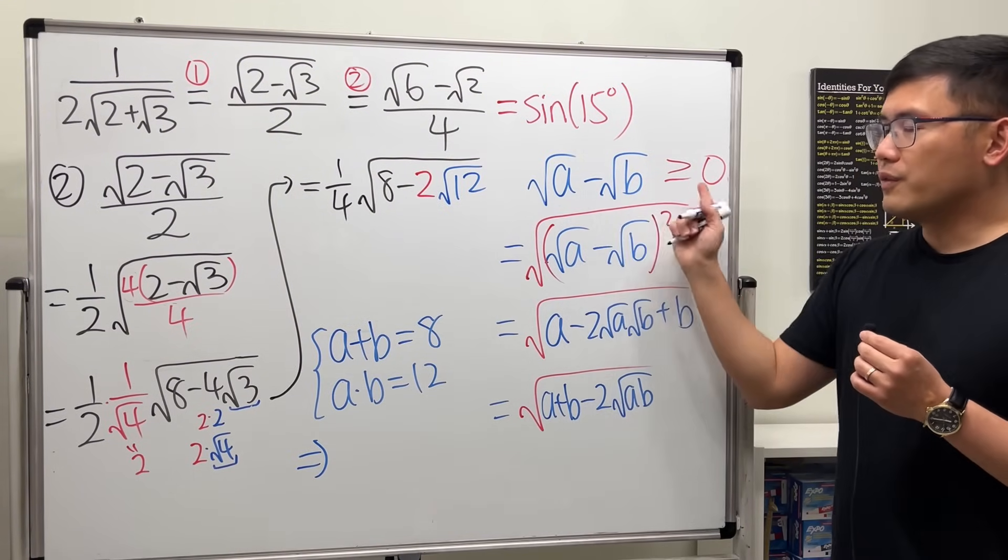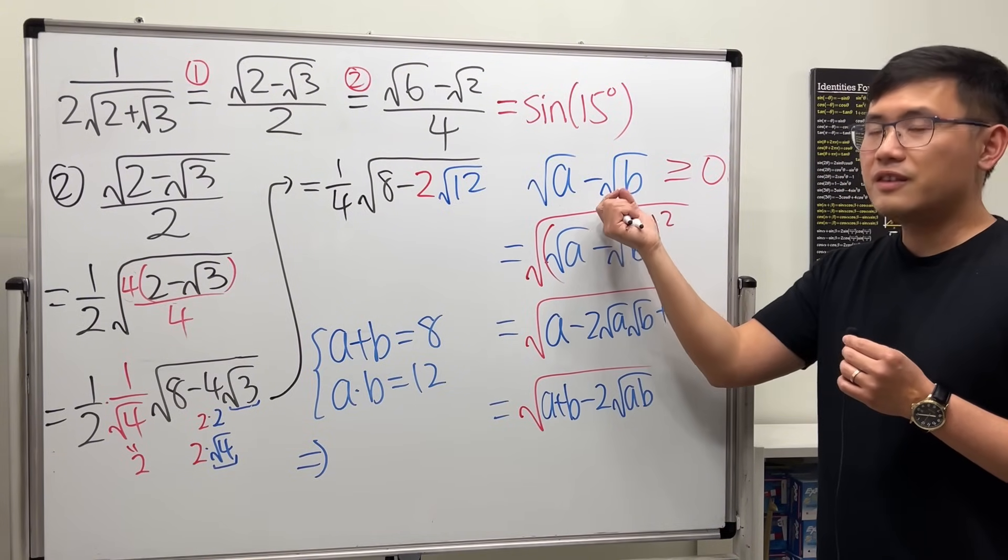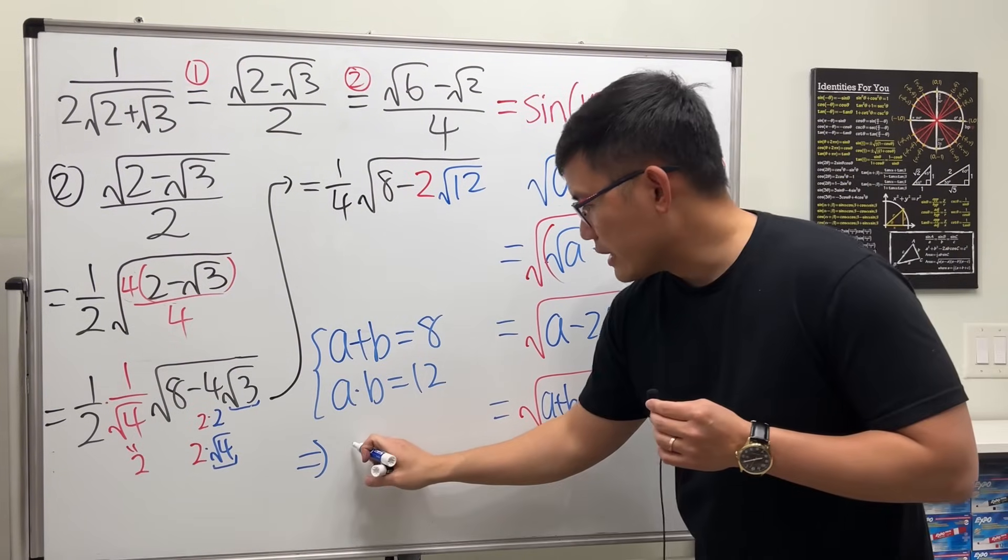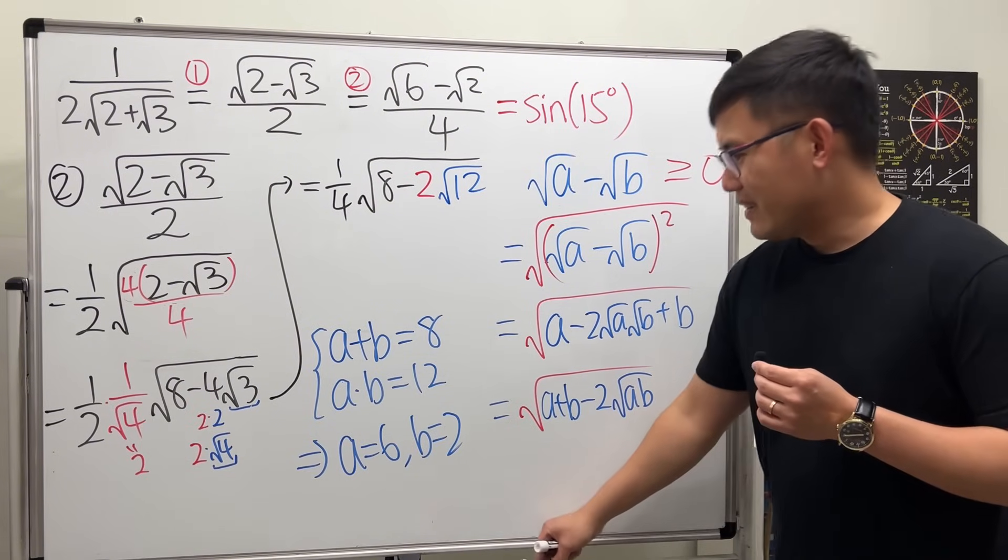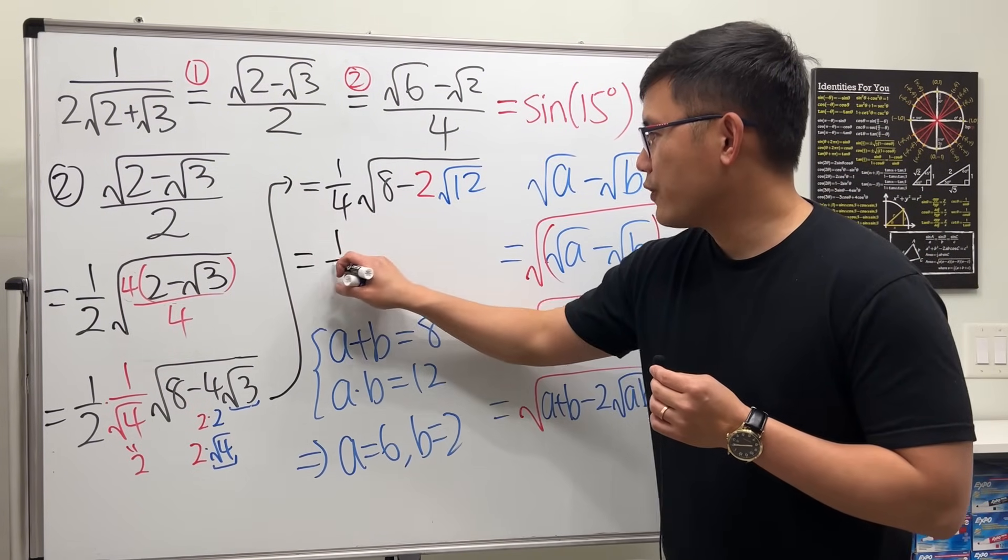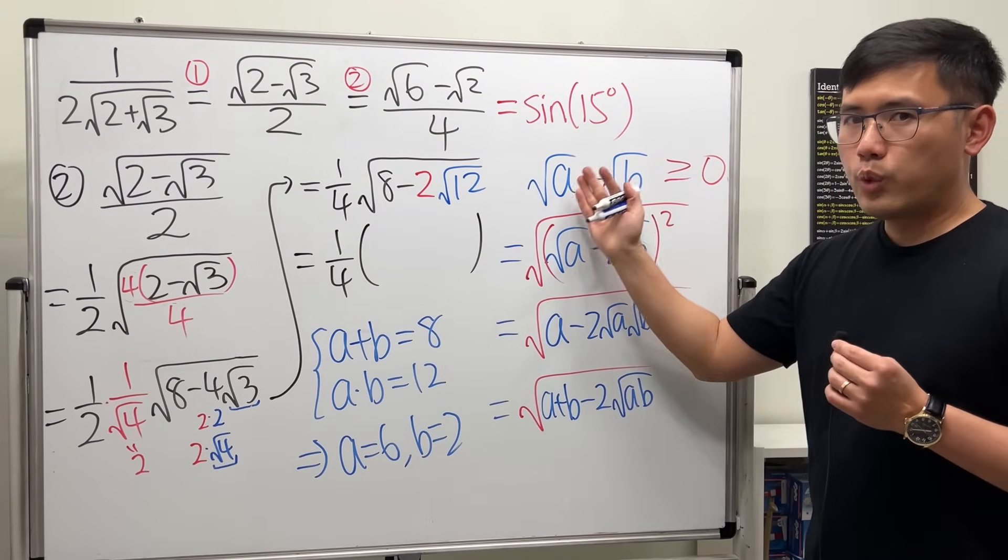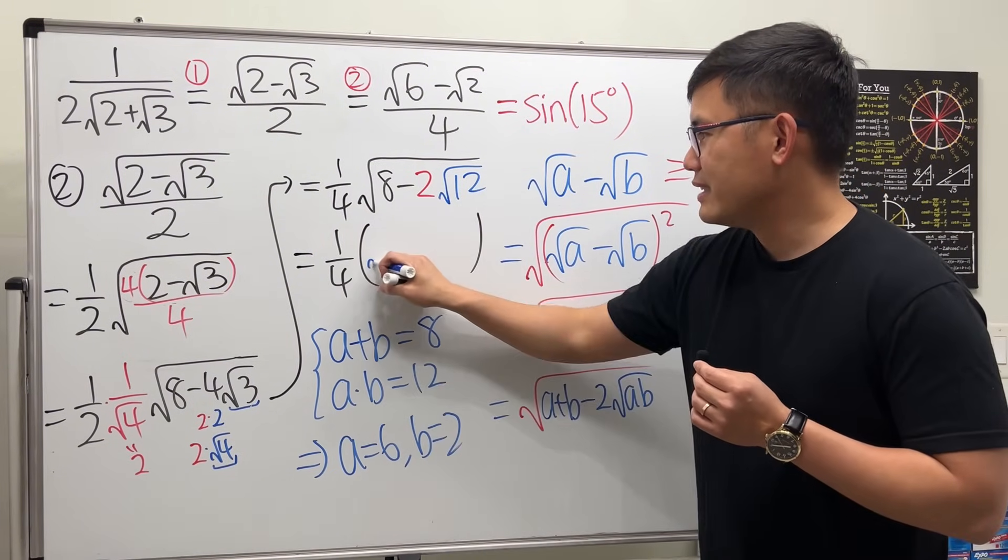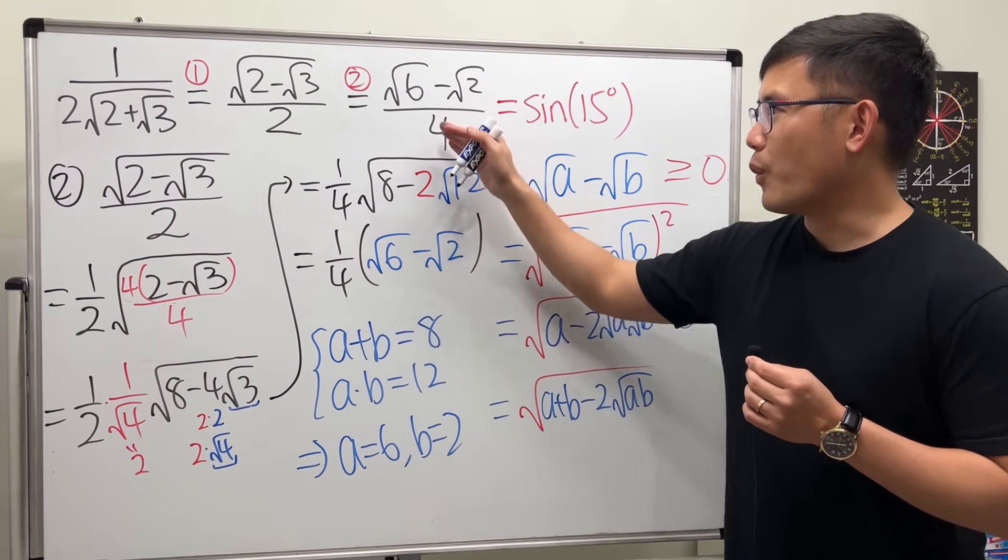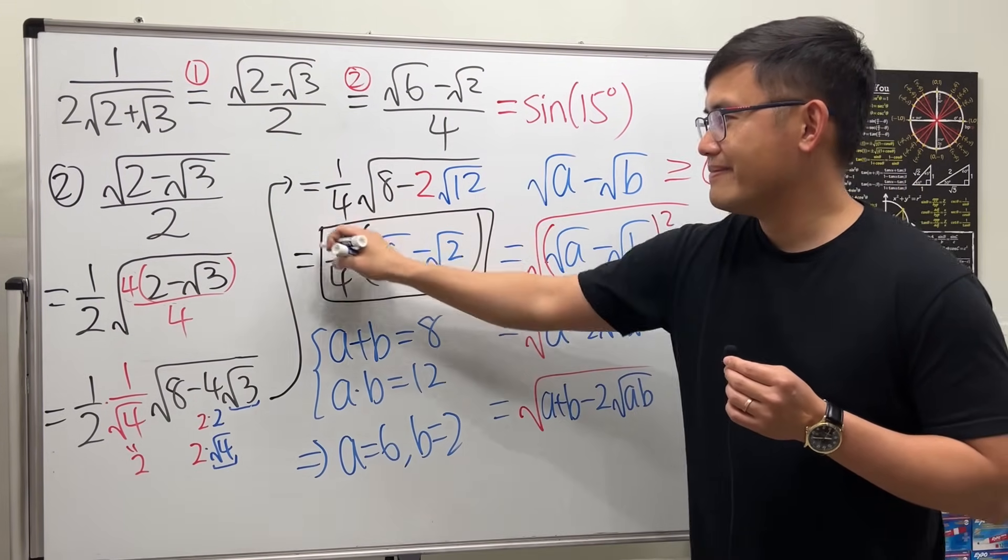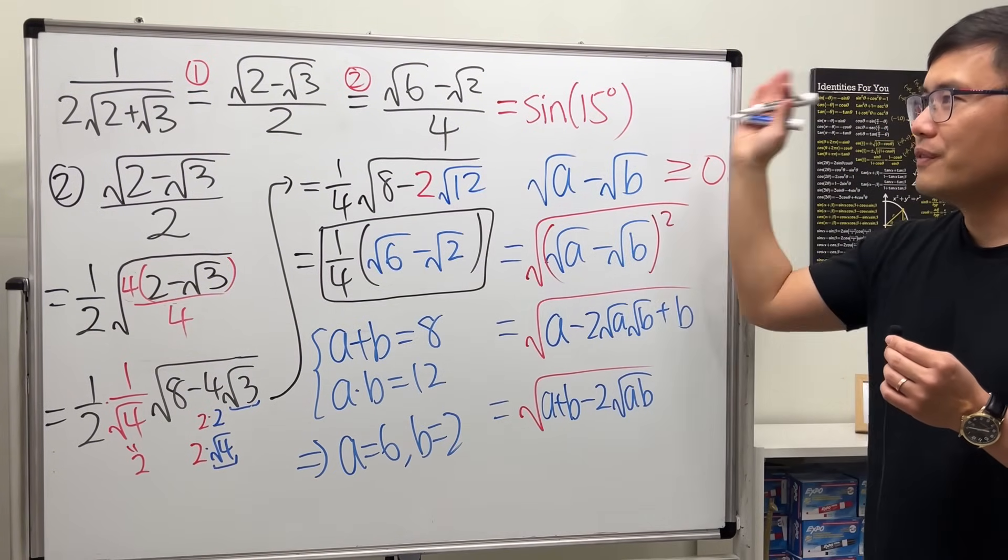And be careful. Because, in order for this to work, we have to make sure that a has to be bigger than b because we have to make sure the inside is positive because there's a subtraction. So, we will say a equals six and b equals two. All right. So, we have the one over four in the front. And then, this right here will just give us square root of a minus square root of b, which is square root of six minus square root of two. Of course, you can put this over four, just like what I have over there. So, they are indeed correct. And they are all equal to sine of fifteen degrees.